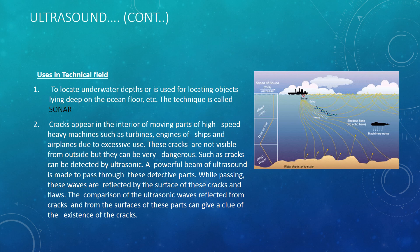The second use in the technical field is that we can find out cracks that appear in metal parts. Sometimes such cracks are not visible — they occur within the metal and we can't see them clearly. So ultrasonic waves are used to detect cracks in the interior of moving parts of high-speed heavy machines such as turbines, ships and airplanes. A powerful beam of ultrasound is passed through these defective parts; the waves are reflected by the surfaces of these cracks and flaws, and comparison of reflections from cracks versus normal surfaces gives a clue to the existence of the crack. This is a very convenient and useful technique. This is all from this week — thank you so much.